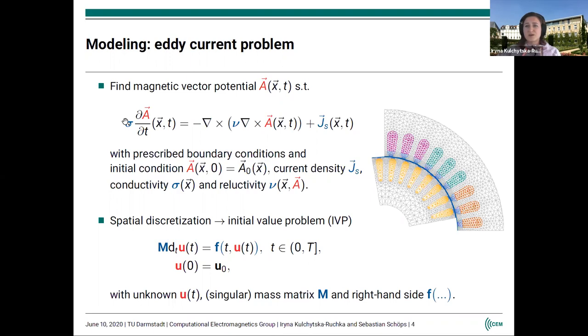I would like to point out that σ might be equal to zero in some part of the domain, for example here in the air gap, because we would have non-conducting regions in the domain. Having the prescribed boundary and initial conditions, one would typically discretize this equation in space, for example with the finite element method, and obtain an initial value problem. This might be a system of ordinary differential equations or, in our case, a system of differential algebraic equations due to the presence of these non-conducting regions.